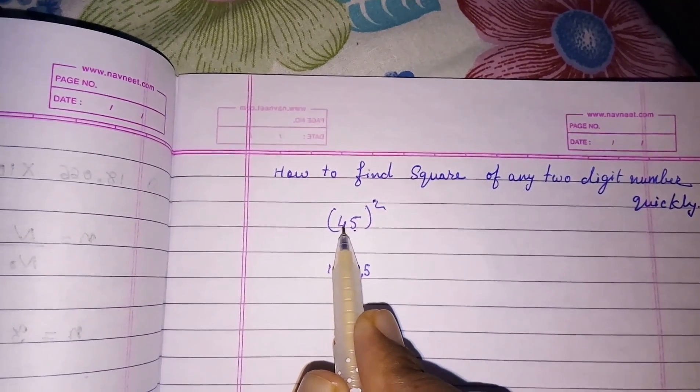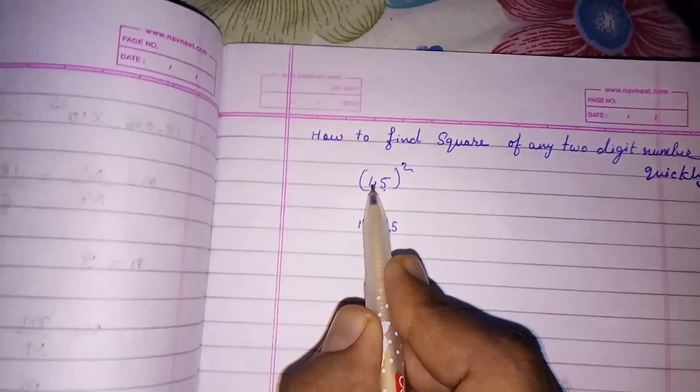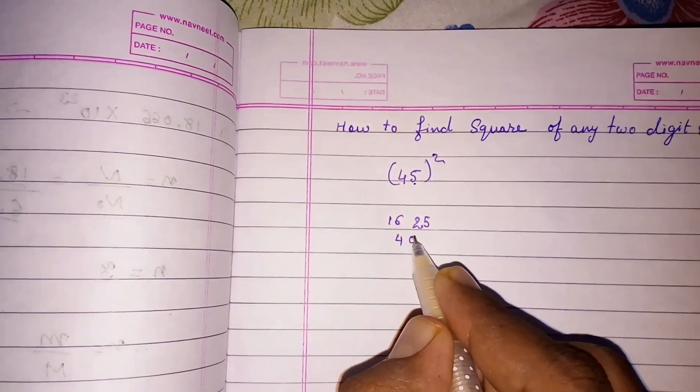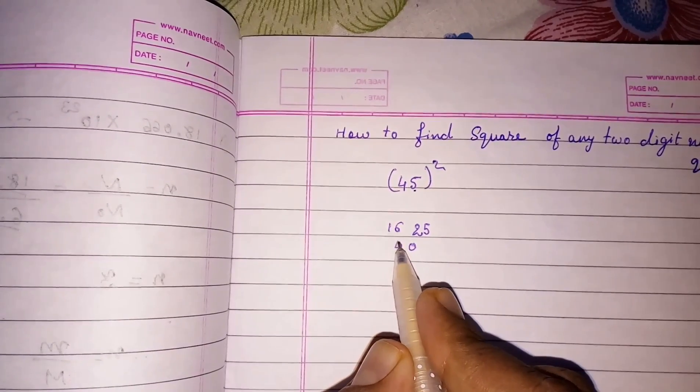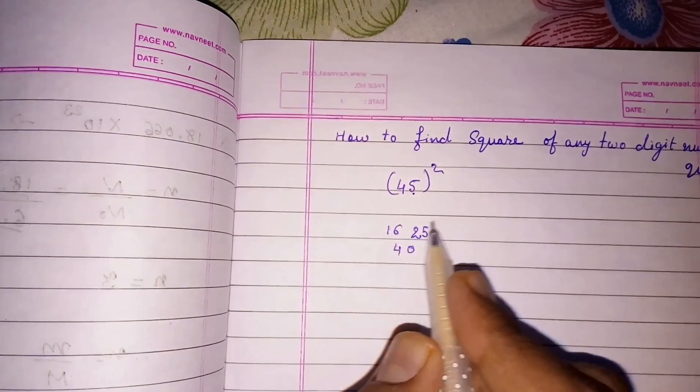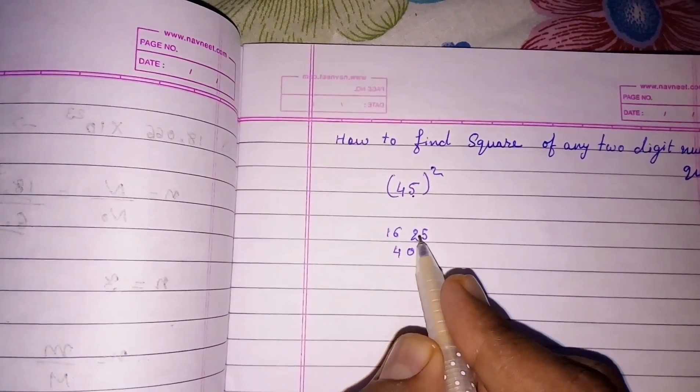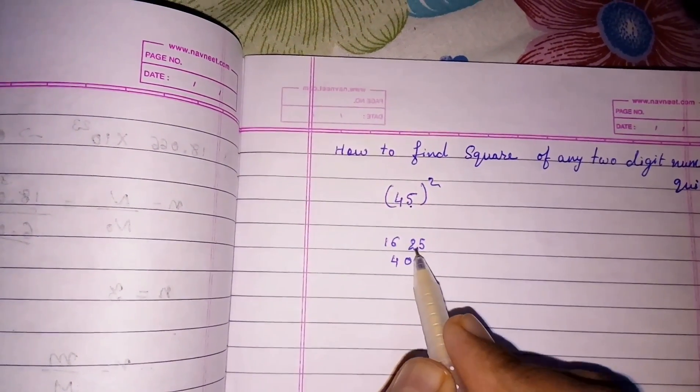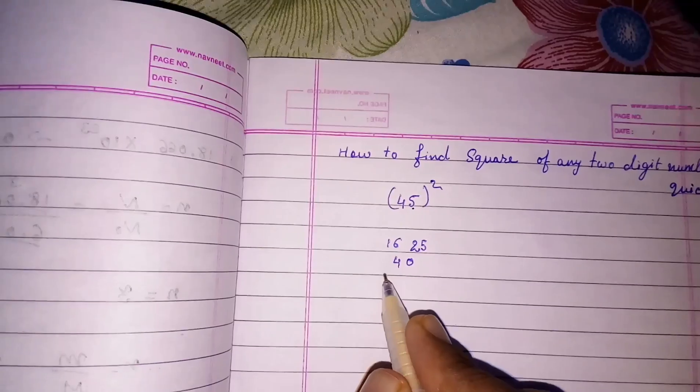4 times 5 is 20, 20 plus 20 gives you 40, or 2 times 20 is 40. We have to put 40 in such a way that the first number comes with the last number of the 4 square, and the second number will be again in the front of the front number of the square.